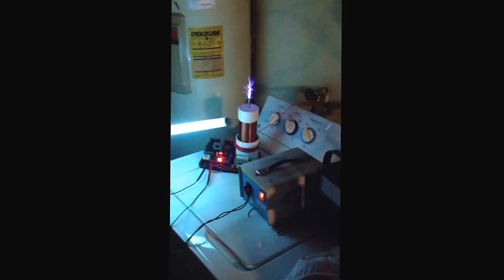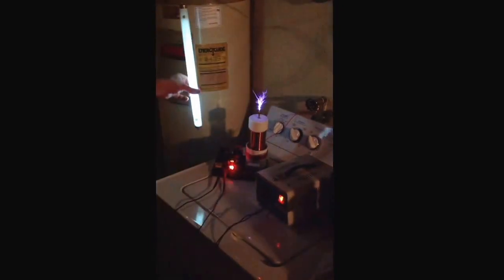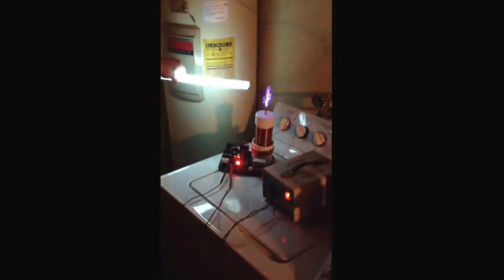The Tesla coil is lighting up a fluorescent light tube with no wires. That is a gauge for how far the RF is going out. That's why I said don't put your iPad closer than there, because there's a whole lot less energy here.